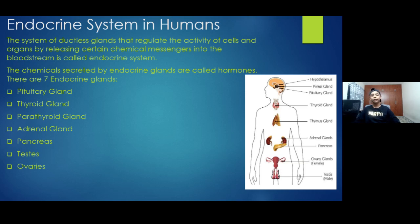Hello guys, in today's video I will be explaining the endocrine system in humans. The system of ductless glands that regulate the activity of cells and organs by releasing certain chemical messengers into the bloodstream is called the endocrine system.